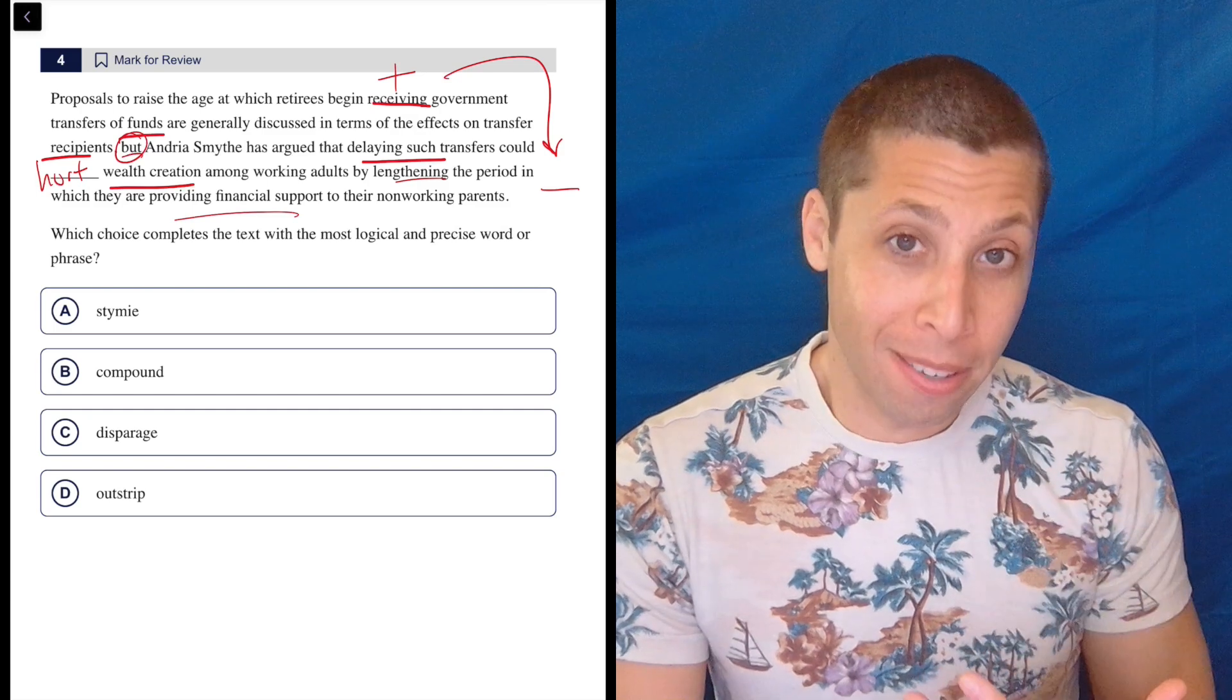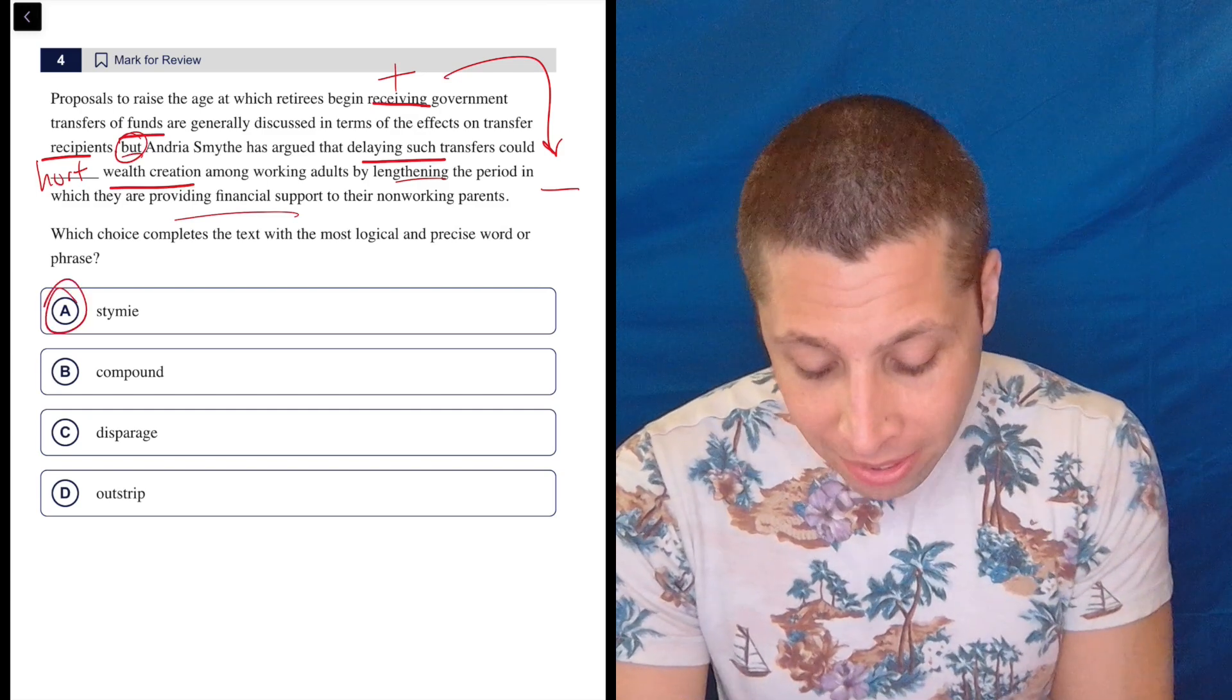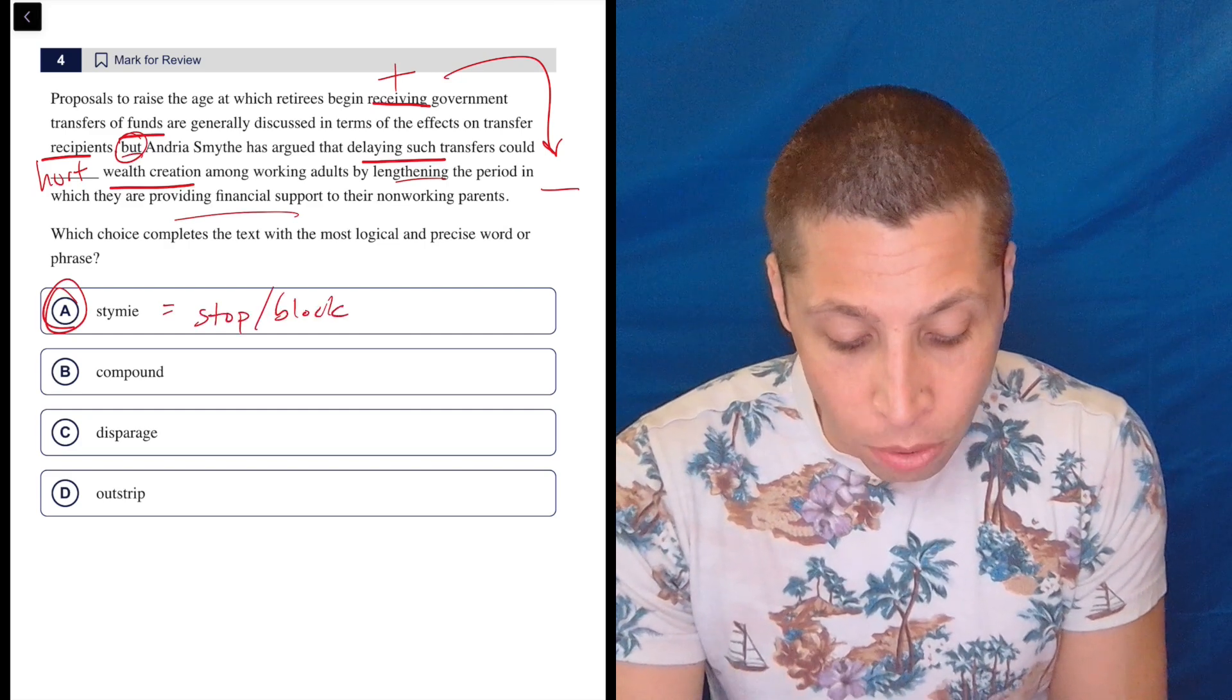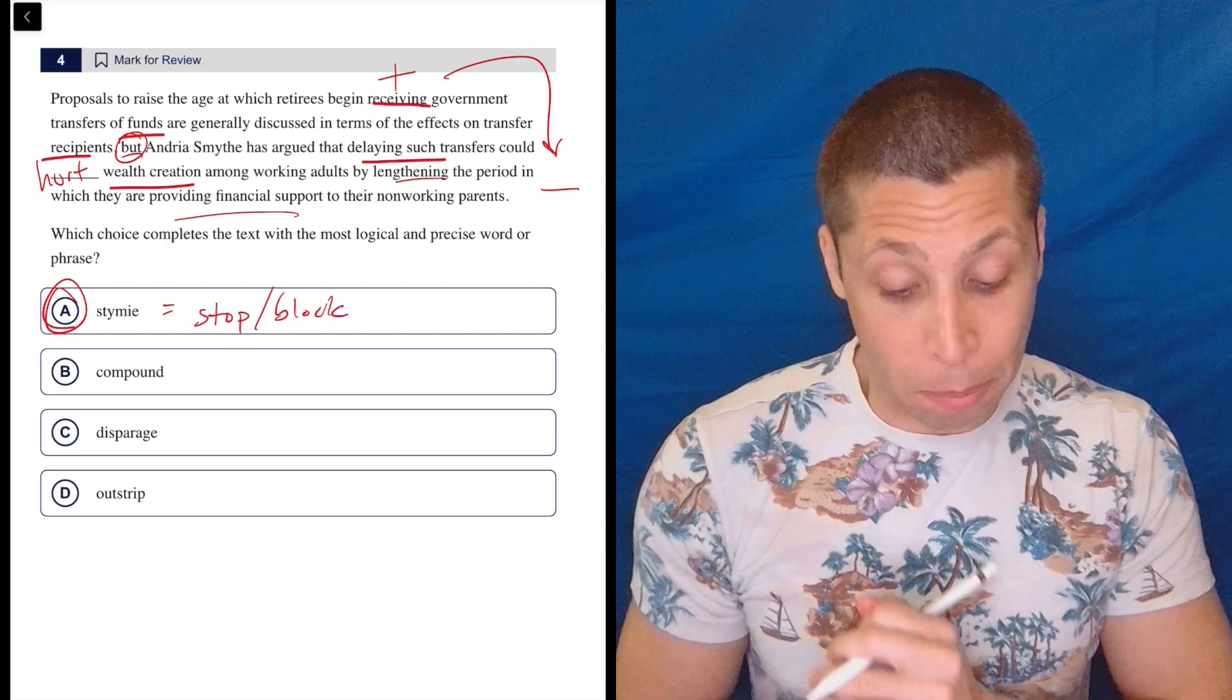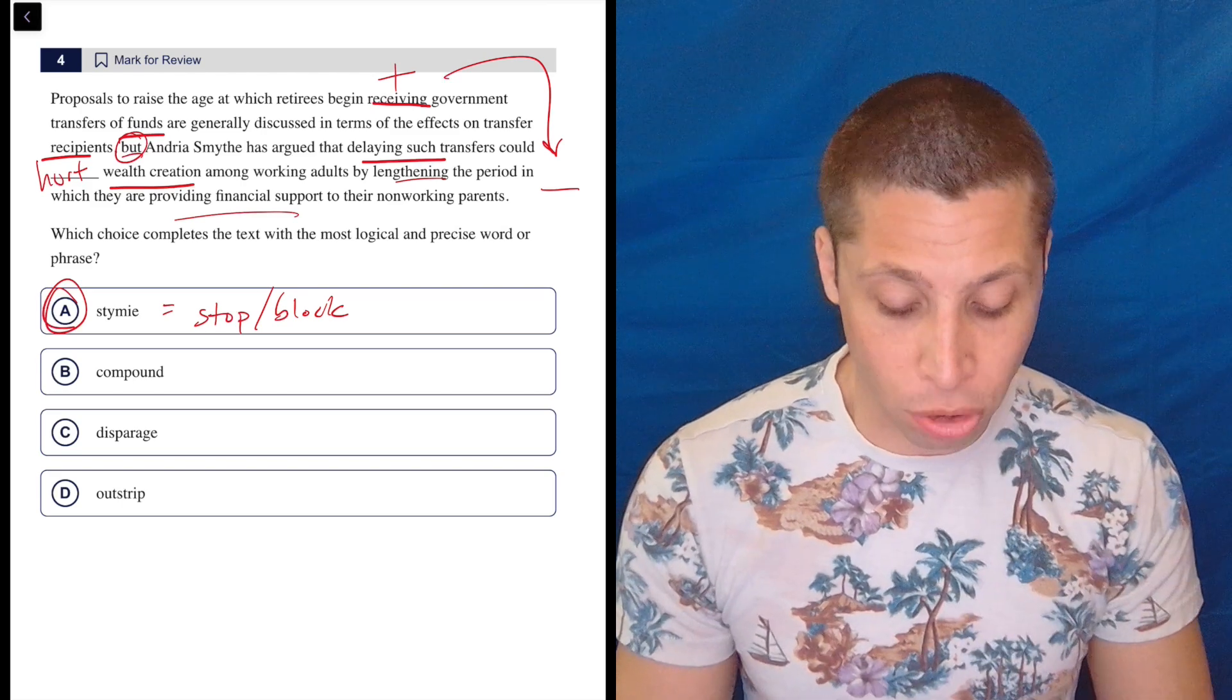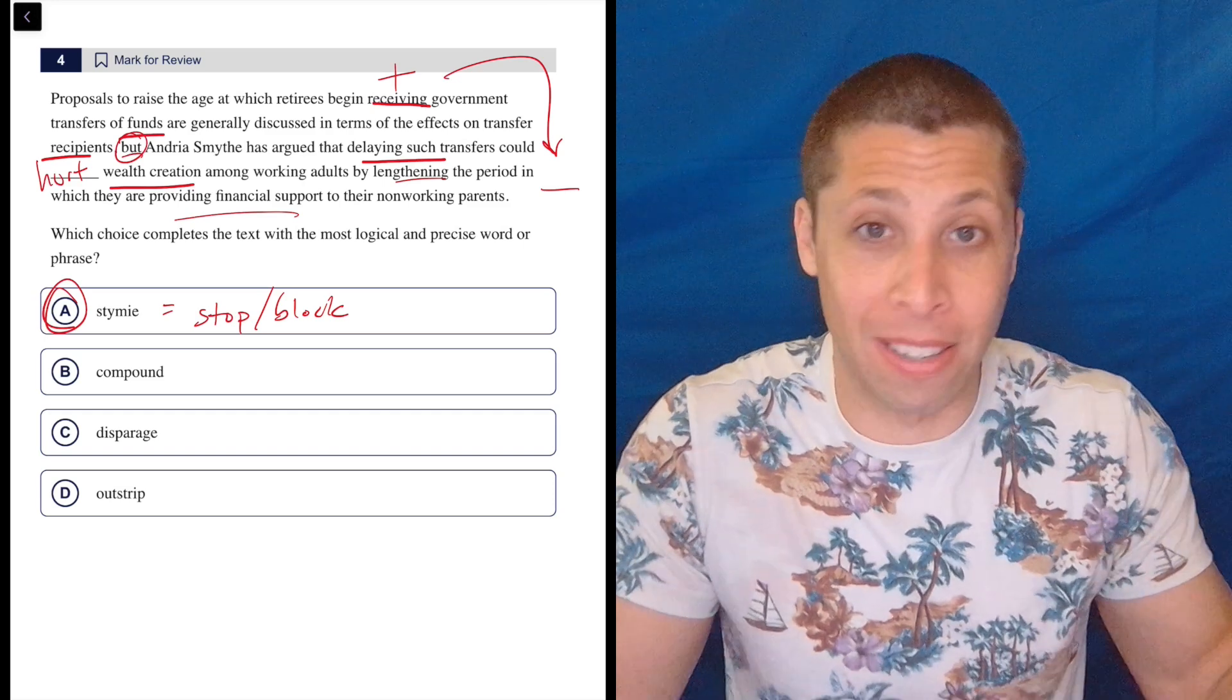So for me, because I have a good vocabulary, the answer here was obvious. Stymie means to kind of stop or block, or hold back. So it's perfect. You're hurting the wealth creation. You're stopping it. You're preventing it from happening. So you're stymieing it. And there you go. That's exactly what I want to say here.